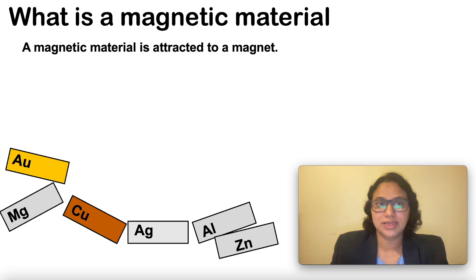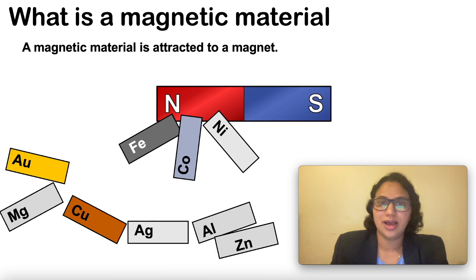What is a magnetic material? Magnetic materials are those that can be attracted to a magnet. Examples are iron, cobalt, and nickel.